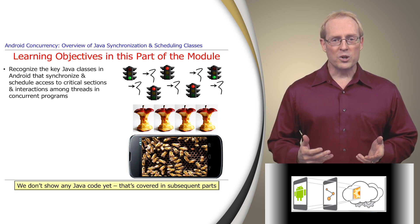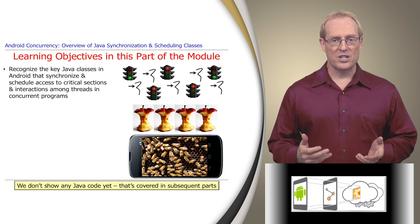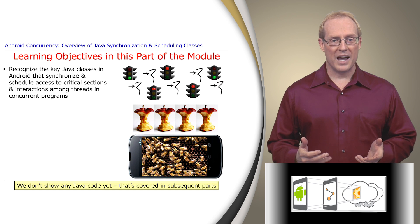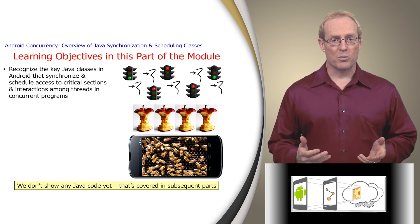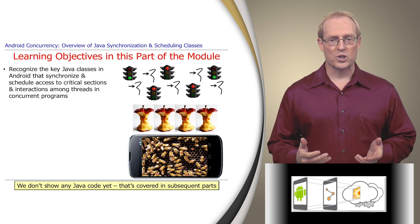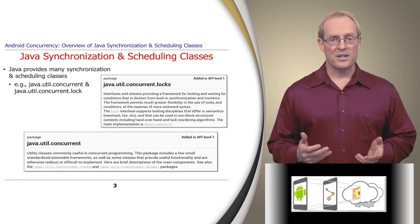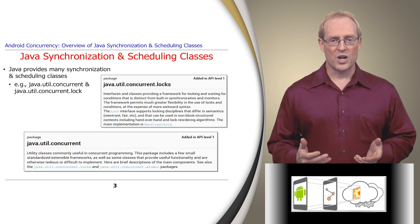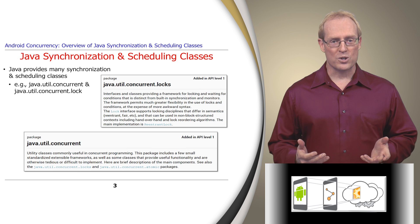We don't show any Java code in this part. We just outline its key synchronization and scheduling classes and compare and contrast them at a conceptual level. Subsequent parts of the module will show how to program these mechanisms in Java. Java defines many synchronization and scheduling classes in its JavaUtilConcurrent and JavaUtilConcurrentLocks packages, which are described at this link.